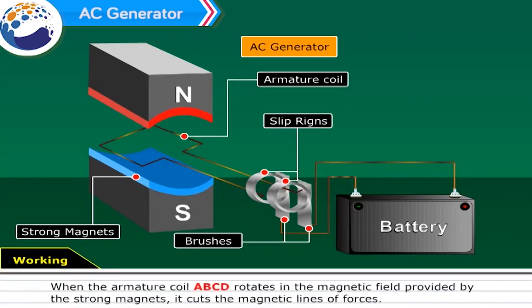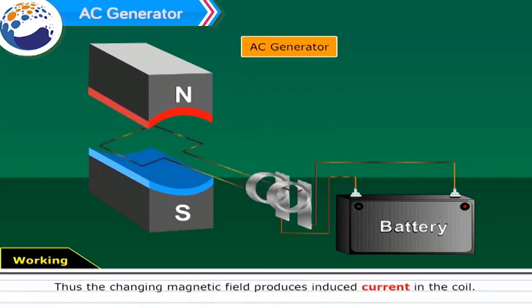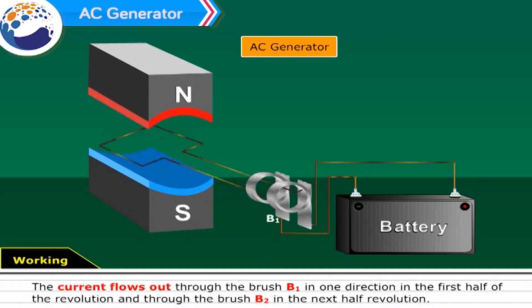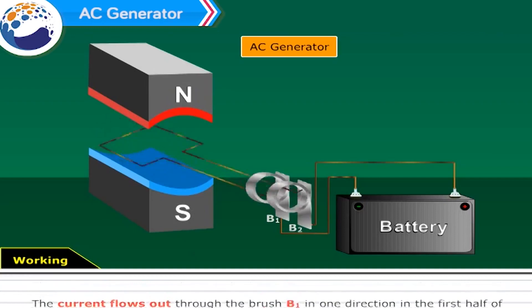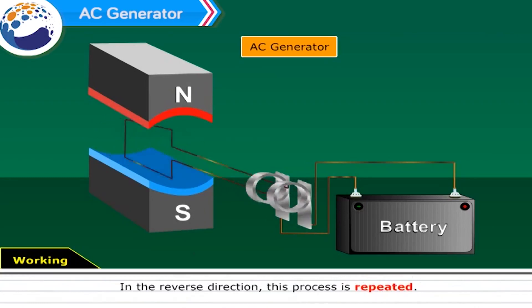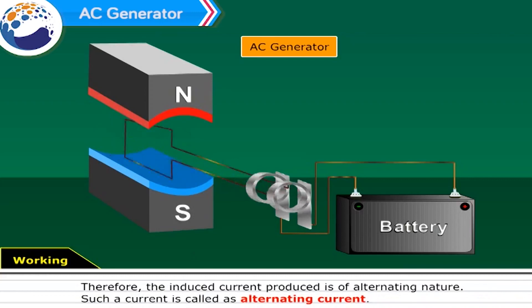Working. When the armature coil ABCD rotates in the magnetic field provided by the strong magnets, it cuts the magnetic lines of forces. Thus, the changing magnetic field produces induced current in the coil. The direction of induced current is determined by the Fleming's right-hand rule. The current flows out through the brush B1 in one direction in the first half of the revolution and through the brush B2 in the next half revolution in the reverse direction. This process is repeated. Therefore, the induced current produced is of alternating nature. Such a current is called as alternating current.